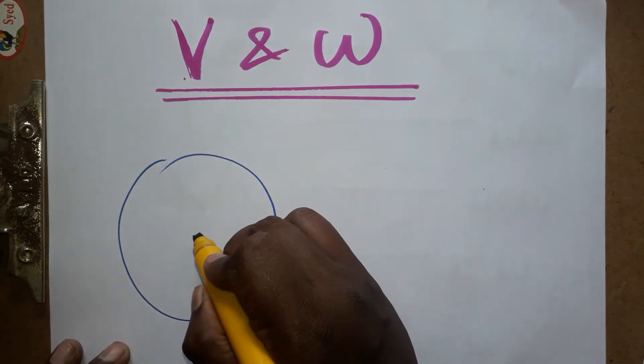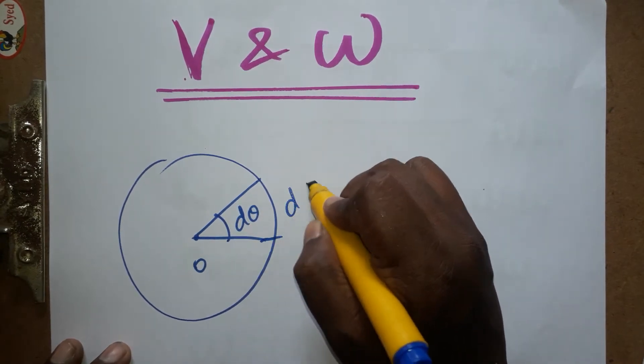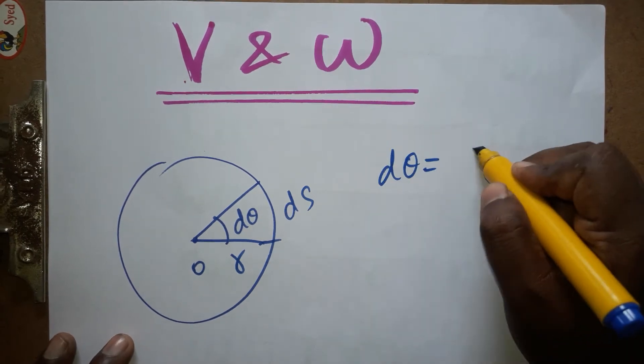...a circular orbit. So center I am taking O, we are taking a small angle dθ, its arc length ds, and radius r. I am taking one equation: dθ = ds/r.